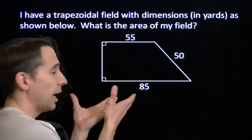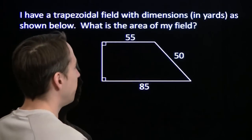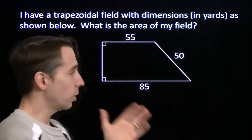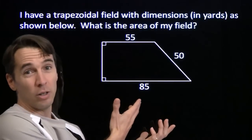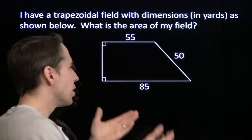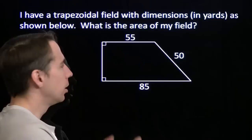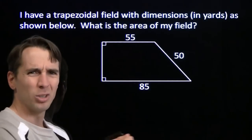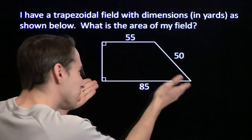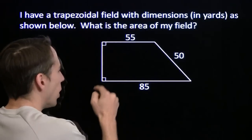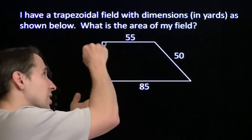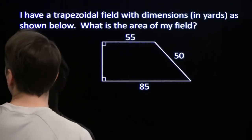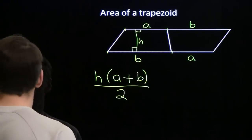I've got this trapezoidal field and I need to go get some seed to plant my field. The bags are based on the area of your field — this covers so many square yards — so I need to figure out the area of my field. Here are the dimensions: I went out and measured the lengths. These two angles are right angles, which means these two sides are parallel, so my field is a trapezoid and I can use this formula to find the area.